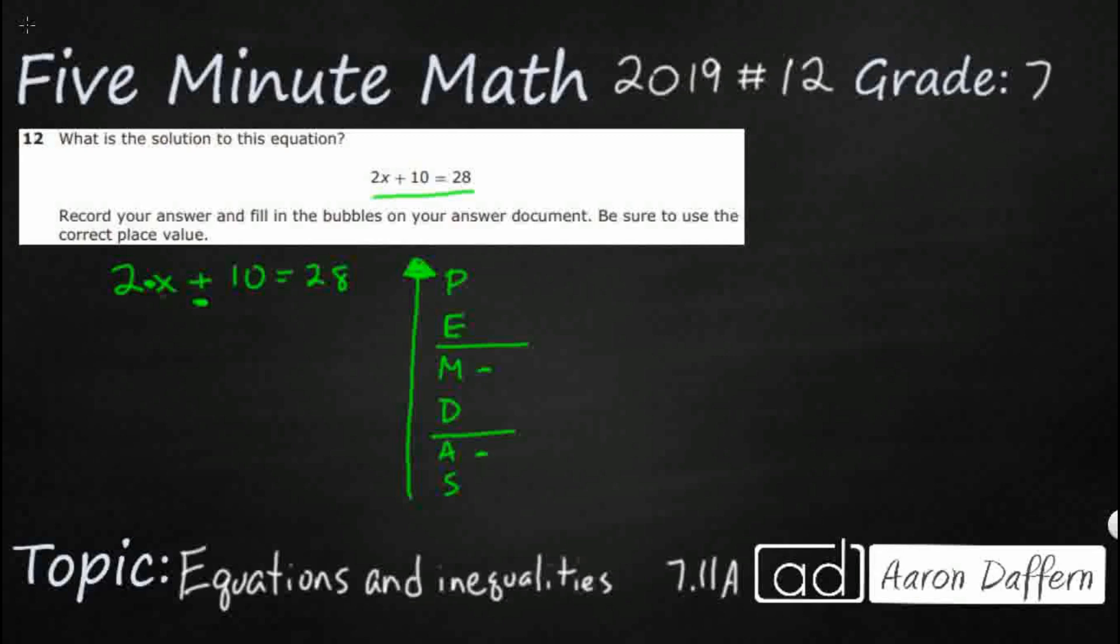How do I get rid of a plus 10? Well, the inverse operation is subtract. Instead of adding 10, I'm going to subtract 10. You can see that those two are going to cancel each other out. I'm going to subtract 10 from this right here, and I've got 18. 28 minus 10 is 18. Now this is all that's left.